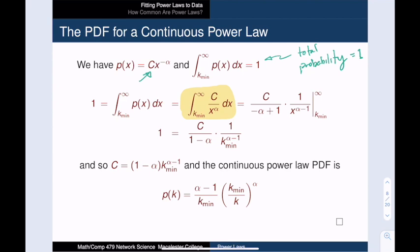The integral we must solve is fairly elementary. We just need to use the power rule from calculus. We will then multiply by kmin over kmin. This lets us write the power law as alpha-1 over kmin, multiplied by kmin over k, all raised to the alpha. So indeed, this is the function that we want to fit to our data.